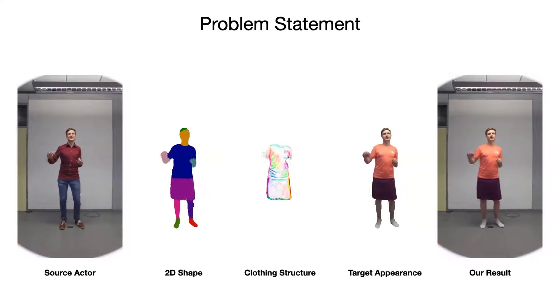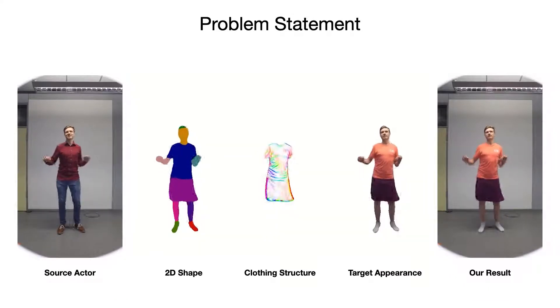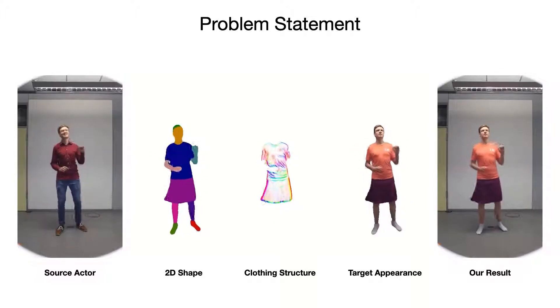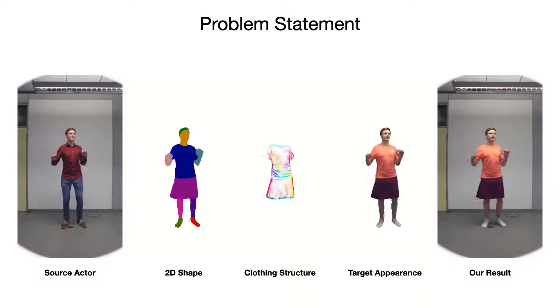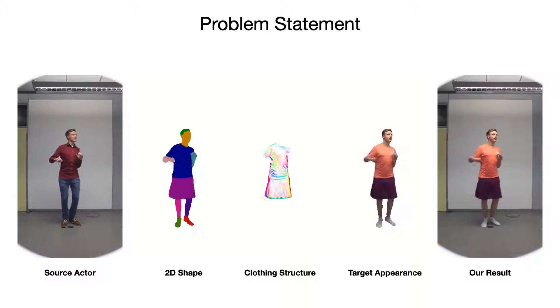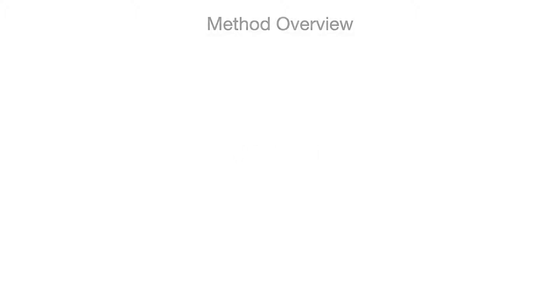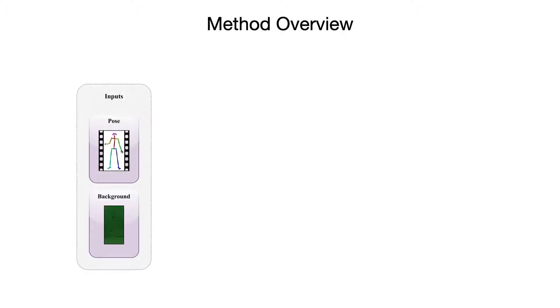To handle the target actor's clothing in a coherent way, we explicitly estimate the actor's shape, internal clothing structure, and resulting appearance under a given source input pose. Given a 2D representation of a source motion sequence and a static background image, our method synthesizes the target actor's appearance for the provided poses.